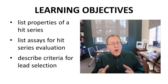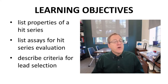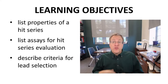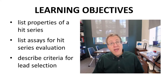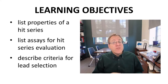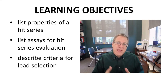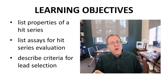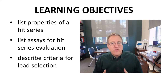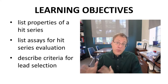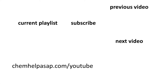We have listed properties of a HIT series as well as assays used to evaluate HIT series, from the primary assay in the initial screen to various in vitro ADME and safety assays. Finally, we described some of the criteria used to select a lead from a HIT pool. That was a quick review of lead selection and the process of prioritizing one HIT series over another. Please consider subscribing, leaving a like, or making a comment. Take care.